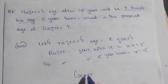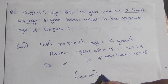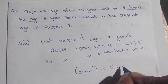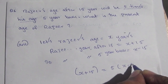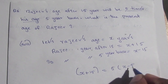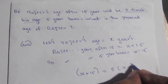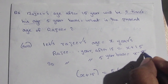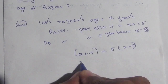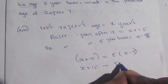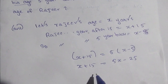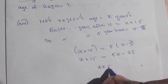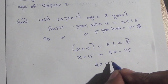Rajiv's age after 15 years is equal to five times his age five years back. So: X plus 15 is equal to 5 times (X minus 5), which gives X plus 15 is equal to 5X minus 25.